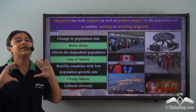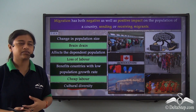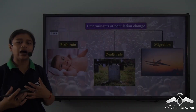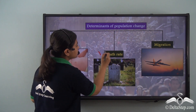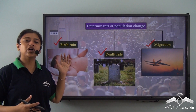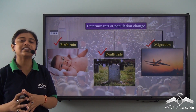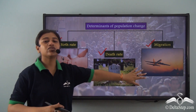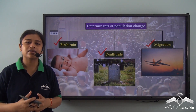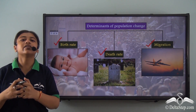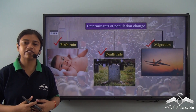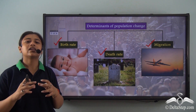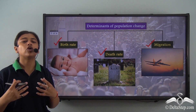Population is highly and immediately affected by migration as an important factor. The three determinants that lead to population change are birth rate, death rate, and migration. Birth rate and death rate are immediate and direct factors, while migration leads to a gradual change in population over a certain period of time. In our next lesson, we will be understanding another important part of population dynamics: the study of population pyramid.